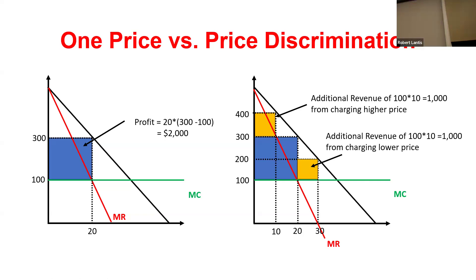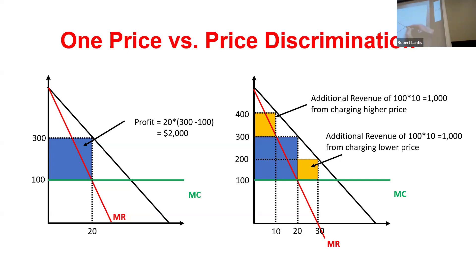I could then identify people with a lower willingness to pay — they weren't even buying the good before, which was just deadweight loss. I can charge them a lower price of $200. From the first 10 people, I took what used to be consumer surplus and turned it into producer surplus. From the people who weren't buying, that used to be deadweight loss — they now are buying it and I'm adding that to producer surplus. By being able to charge consumers different prices, even if I can't perfectly price discriminate, I'm still reducing consumer surplus and reducing deadweight loss.